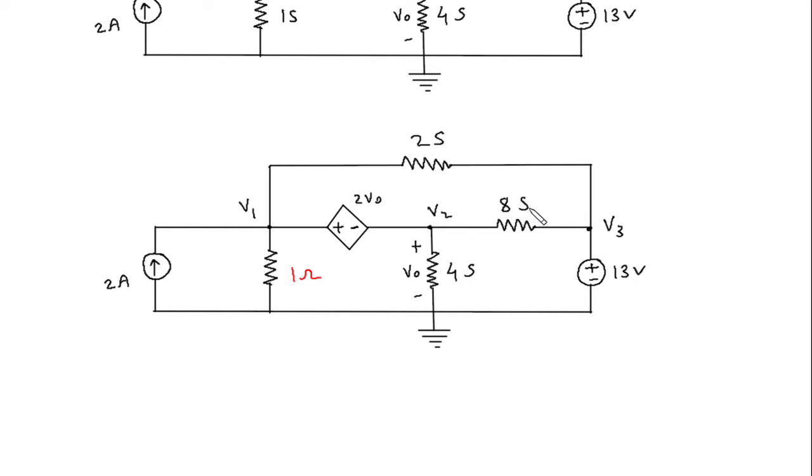This 8 Siemens will be replaced by 1 by 8 Ohm. This 4 Siemens will be replaced by 1 by 4 Ohm. This 2 Siemens replaced by 1 by 2 Ohm.